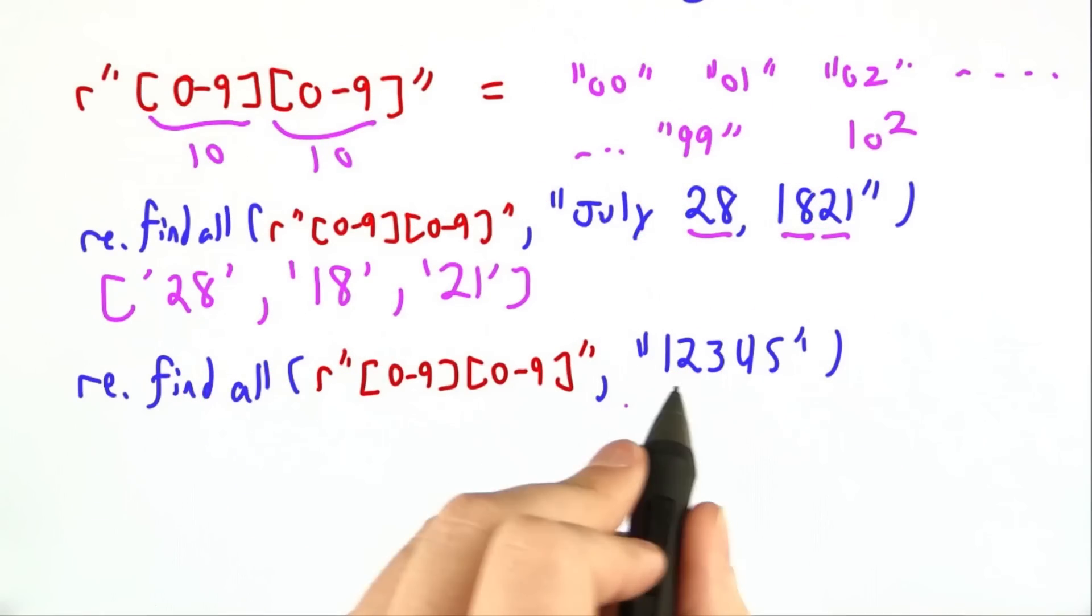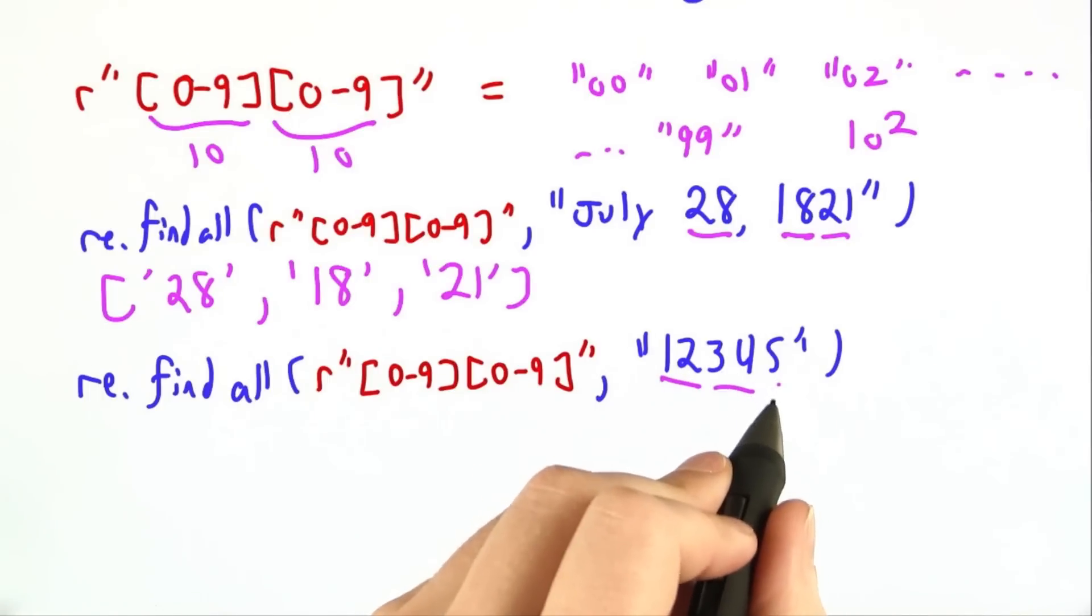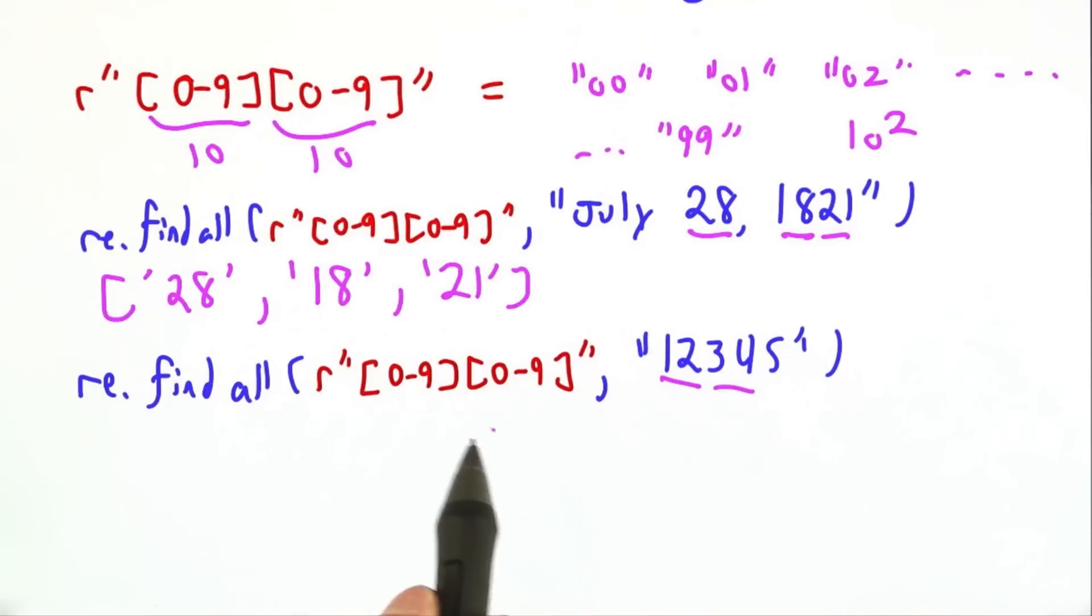Now I'm looking for two-digit numbers in 1, 2, 3, 4, 5. 1, 2 is a two-digit number, 3, 4 is a two-digit number, but 5 actually does not qualify.